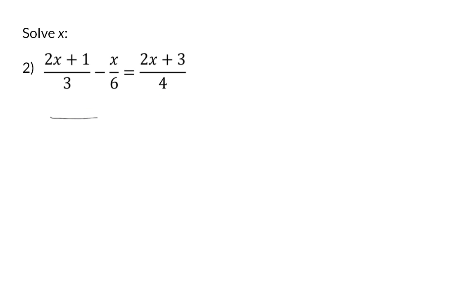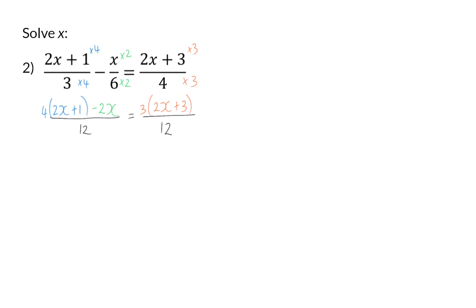In example 2, the common denominator will be 12, and we need to change the fractions accordingly. In the first fraction, the denominator still has to be multiplied by 4, and that means I will have to multiply 4 by 2x plus 1. In the second fraction, the denominator is multiplied by 2, so that means we will have minus 2x in the numerator. The right-hand side's denominator is multiplied by 3, so I will have to multiply 3 with the 2x plus 3. Now that the denominators are the same, I'm going to work only with the numerators, and I have to multiply the 4 in to get 8x plus 4, and then there's also the minus 2x on the left. On the right, I'm going to multiply in the 3 to get 6x plus 9.